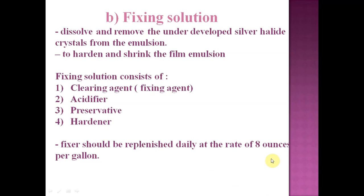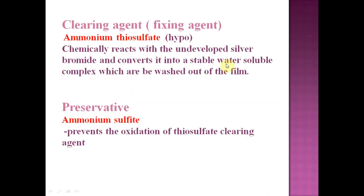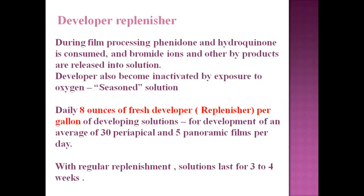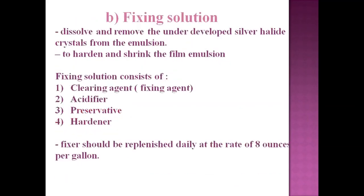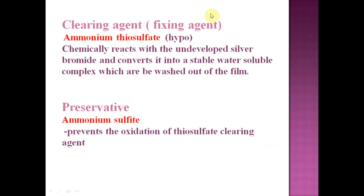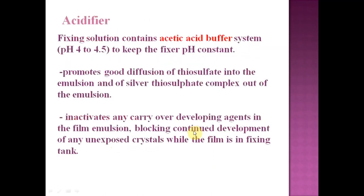The fixing solution consists of a clearing agent (fixing agent), acidifier, preservative, and hardener. The clearing or fixing agent is ammonium thiosulfate, which chemically reacts with the undeveloped silver bromide and converts it into a stable, water-soluble complex that is washed out of the film. The preservative is ammonium sulfite, which prevents oxidation of the thiosulfate clearing agent.